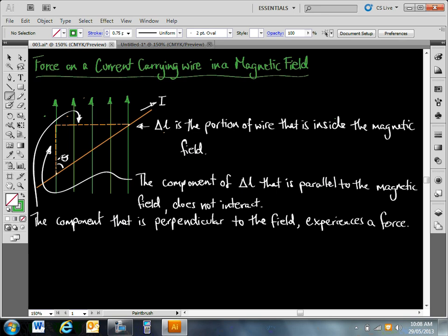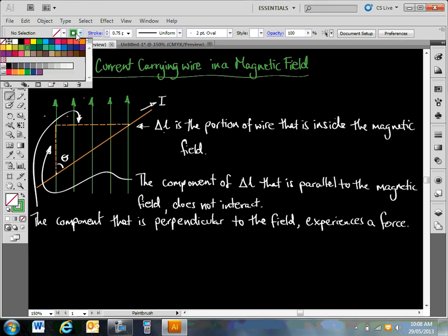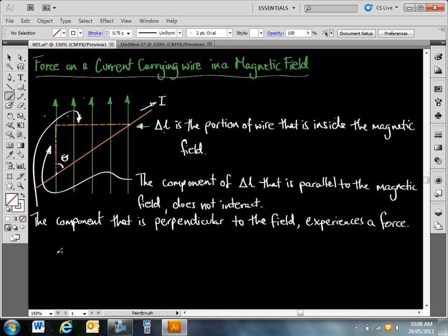Then you can see that if this is theta here, in the corner here, we want to find this component here. So opposite, and the hypotenuse, of course, is our current element. So sine of theta equals opposite over hypotenuse. So we have, then, the force. Actually, I'll do that in white. The force that that current element experiences is equal to the current element itself, I delta L, times the magnetic field, times sine of theta.